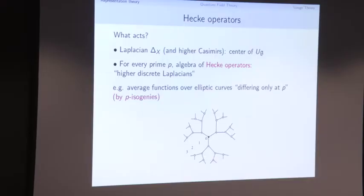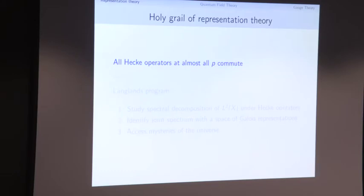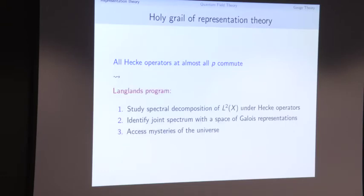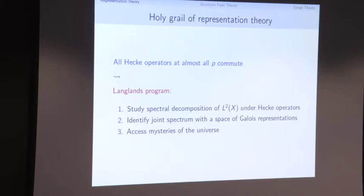Now we know what to do: if you have a big family of commuting operators, you do the Langlands program. You study the spectral decomposition, identify the joint spectrum, and the Langlands program tells us that this joint spectrum is related to a space of representations of the Galois group. And finally, you use this to access the mysteries of the universe, as should be evident here in the Andrew Wiles Building — one of the tremendous successes being the proof of Fermat's Last Theorem from this point of view.